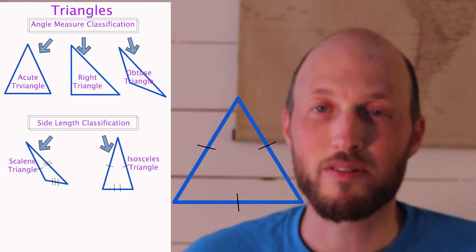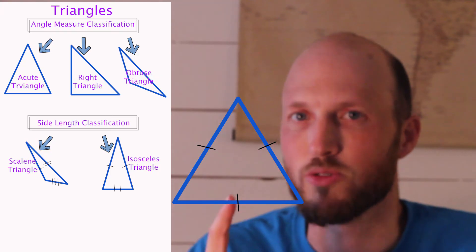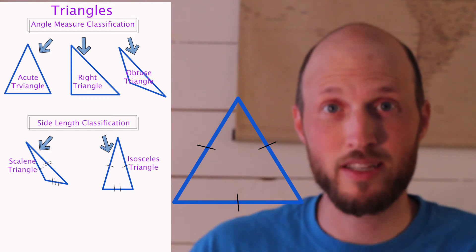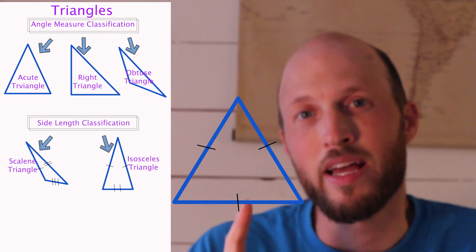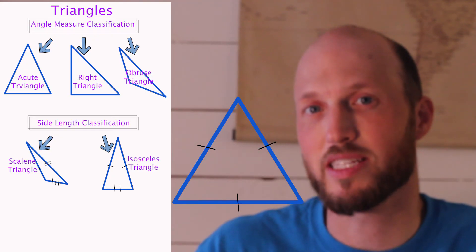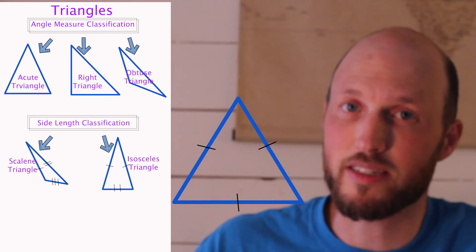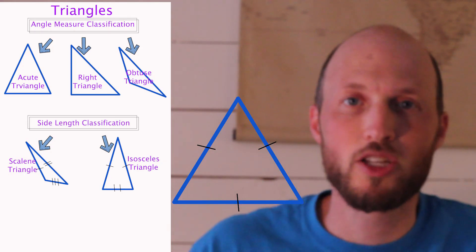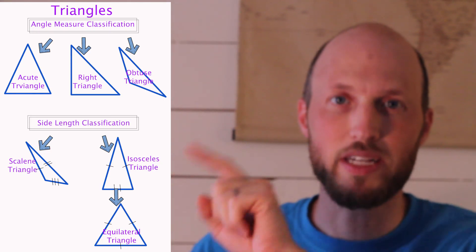Equilateral means all sides are the same length. But let's think about our classification of isosceles — it says at least two sides the same. Does this triangle have at least two sides the same length? It does. So an equilateral triangle is actually a specialized isosceles triangle. It is still an isosceles triangle, but it is special in that all three sides are the same length. The biggest misconception is that an equilateral triangle is not an isosceles triangle — but it is, because it has at least two sides the same.